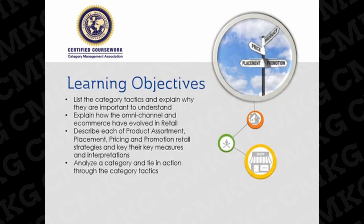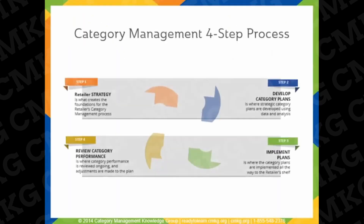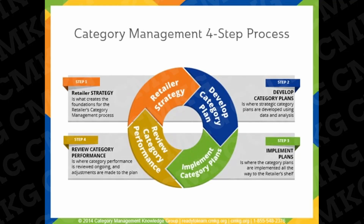Let's get started. The Category Management process consists of the following four steps: Step 1 — Retailer Strategy; Step 2 — Develop Category Plans; Step 3 — Implement Category Plans; and Step 4 — Review Category Performance.